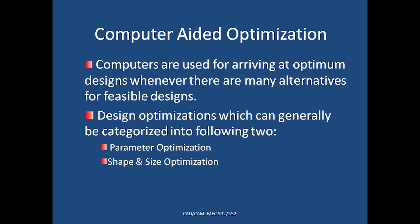Computers are used to arrive at optimum designs when there are many alternatives for feasible designs. There are typically two categories of design optimization. One is parametric optimization, where you optimize given parameters — for example, optimizing the cross-section of a beam so that minimum material is used. Shape and size optimization is when you have the liberty to change the shape or size of the product you want to optimize.